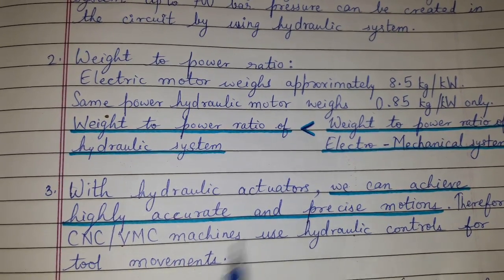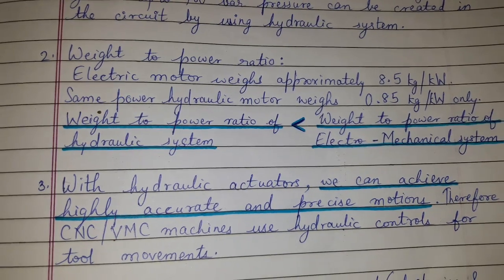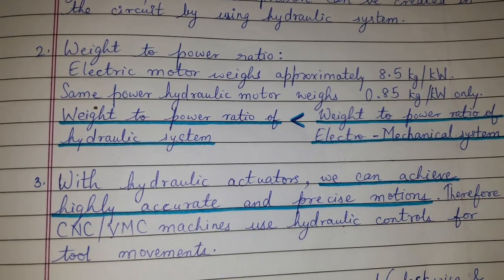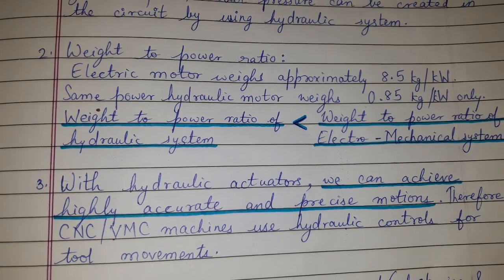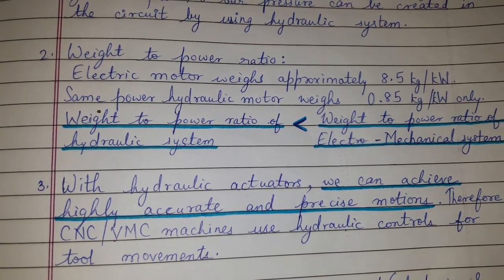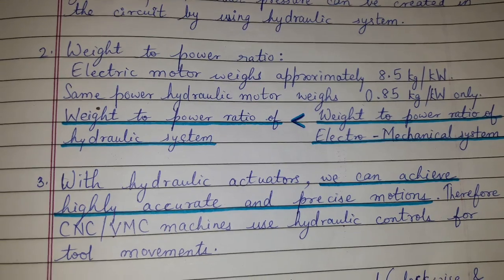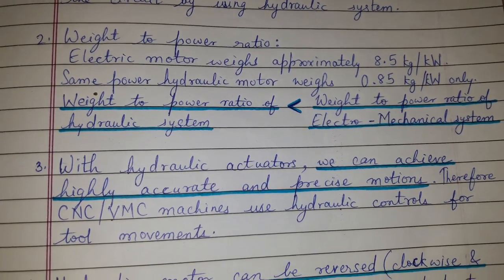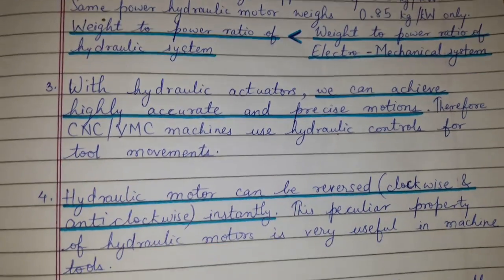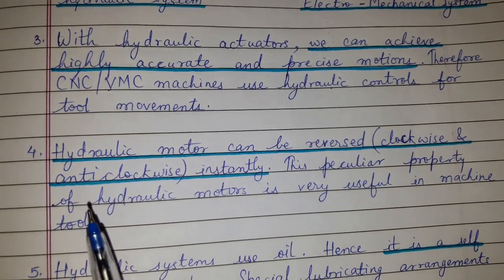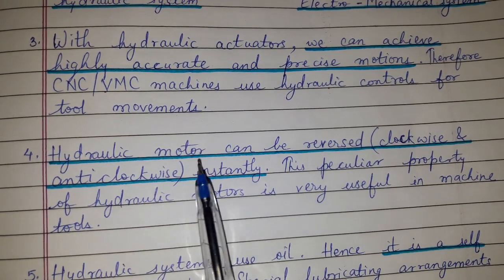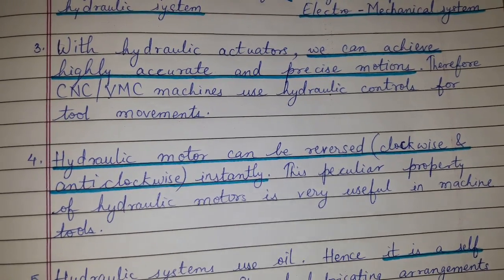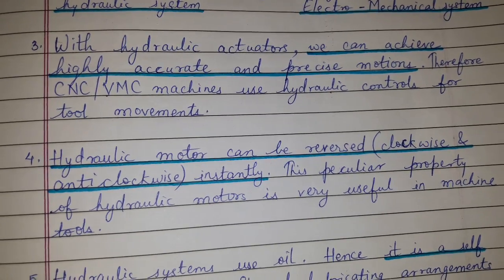With hydraulic actuators, we can achieve highly accurate and precise motion. Therefore, CNC or VMC machines use hydraulic controls for tool movement.